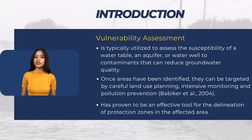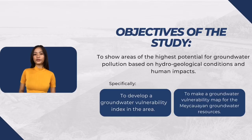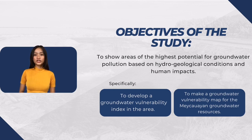By using the vulnerability assessment tool, areas that are most prone to pollution and contaminants will be identified and will be subject to careful land use planning, intensive monitoring, and pollution prevention. The main objective of the study is to show areas of the highest potential for groundwater pollution based on hydrogeological conditions and human impacts. Particularly, the researchers aim to develop a groundwater vulnerability index and a groundwater vulnerability map for the Meikawayan groundwater resources.